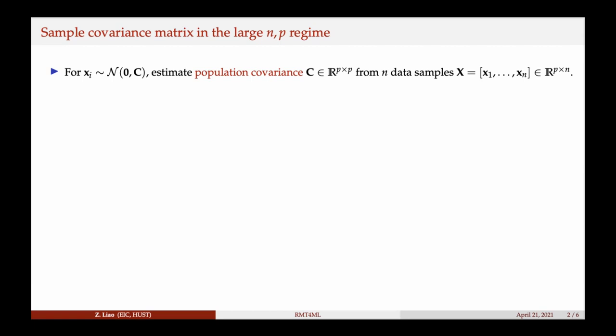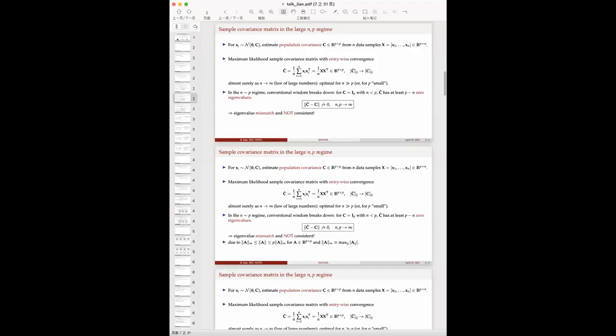Therefore the sample covariance has at least p minus n zero eigenvalues. There was a brief technical issue — the slides were not visible to the audience — but after stopping and resharing, the presentation resumed successfully.